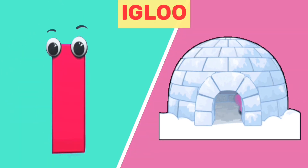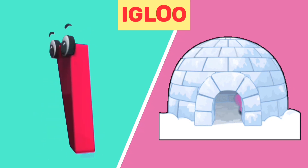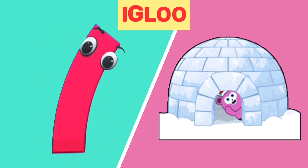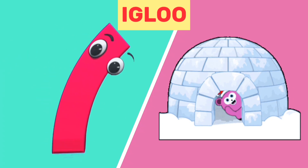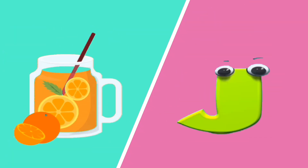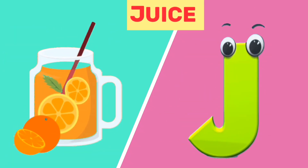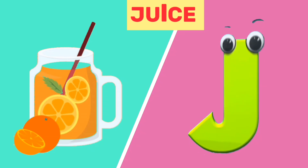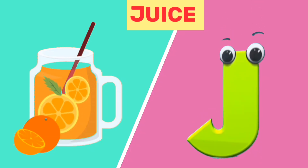I is for igloo. I, i, igloo. J is for juice. J, j, juice.